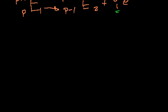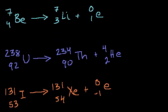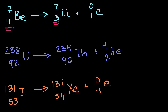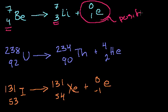Let's do some actual problems and figure out what type of decay we're dealing with. Here I have beryllium-7 with atomic mass 7, being converted to lithium-7. My nuclear mass is staying the same, but I'm going from 4 protons to 3 protons — so I'm reducing my number of protons. My overall mass hasn't changed, so it's definitely not alpha decay. What am I releasing? I'm releasing one positive charge — a positron. So this type of decay of beryllium-7 to lithium-7 is positron emission.